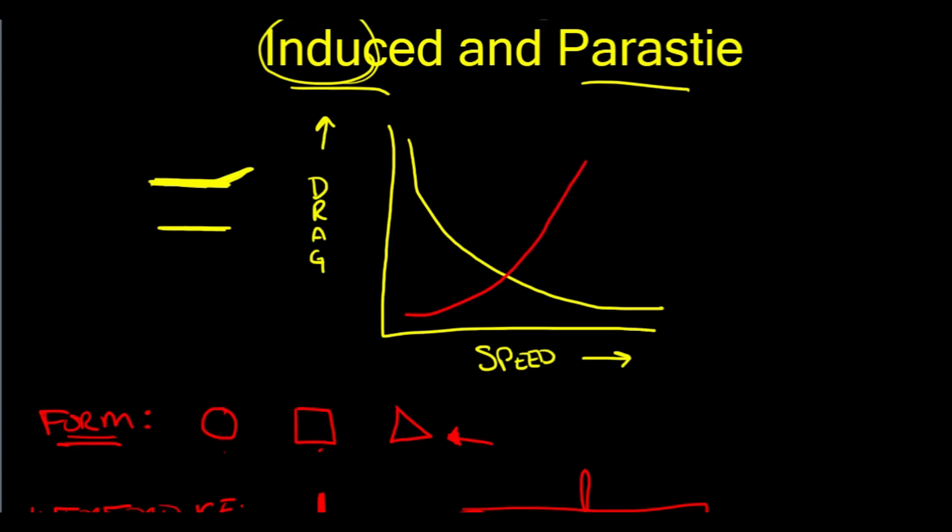And then, as we increase our speed, our drag increases. So, parasite drag increases with the square of the speed. And induced drag is the inverse square of our speed.